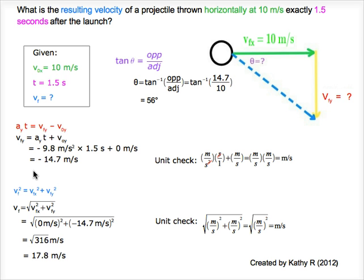To get Vf, we use the Pythagorean theorem shown in blue. Substitute the values and we got 17.8 meters per second for Vf.